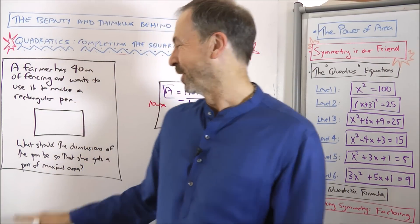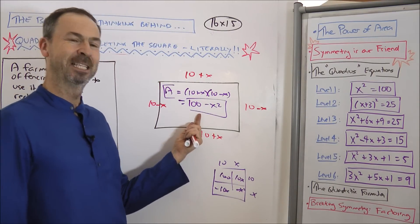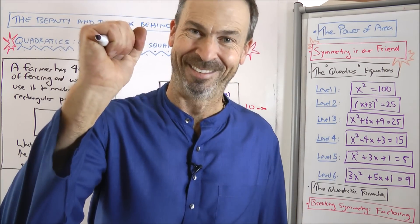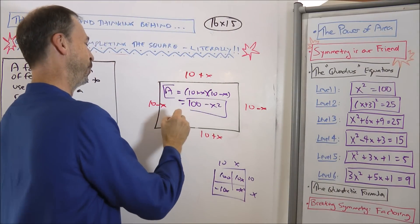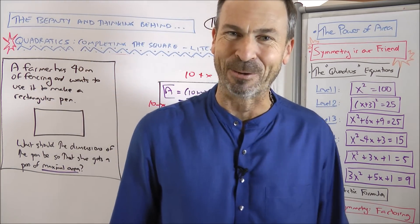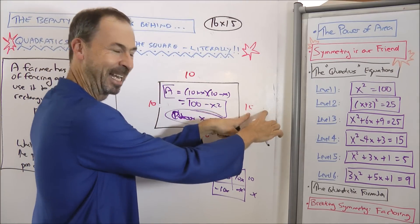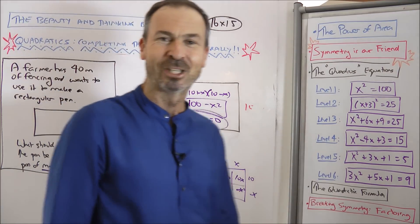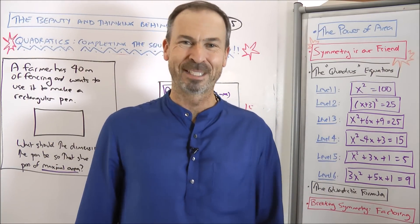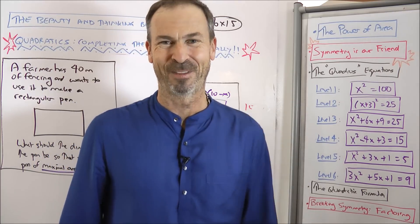The area is 100 minus x squared. The question wants maximal area. To make 100−x² as large as possible, we want to subtract the smallest amount — we want to subtract nothing. So choose x=0. The rectangle is then 10+0 by 10−0, which is 10 by 10: a square pen with area 100, the maximum possible. By asking how far off from the symmetrical answer we were, we got the answer immediately. Symmetry is our friend.